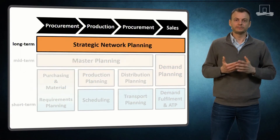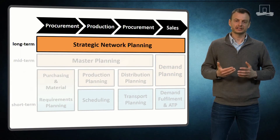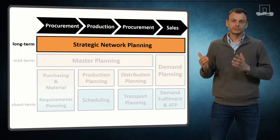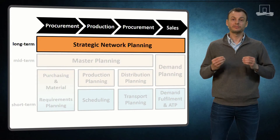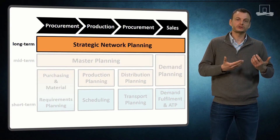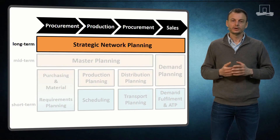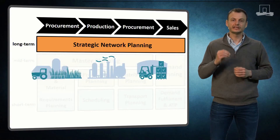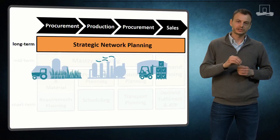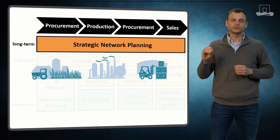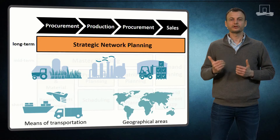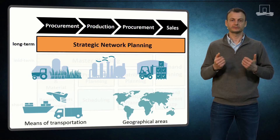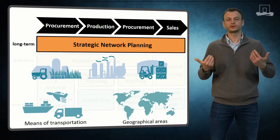A very important long term planning activity in supply chain management is strategic network planning. It is very common to assume a planning interval of several years since we focus on designing the structure of the supply chain. We make decisions related to the location and capacities of production sites, processing facilities, and warehouses. Strategic network planning also involves decisions related to means of transportation and geographical areas of customers.